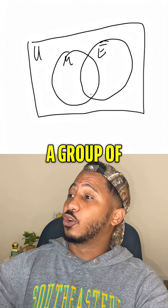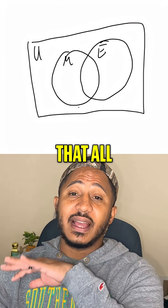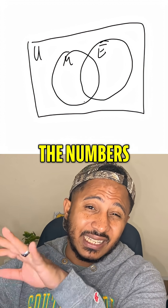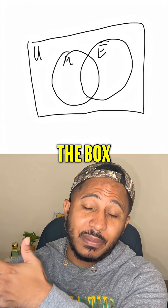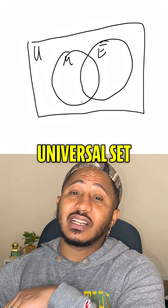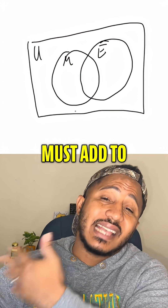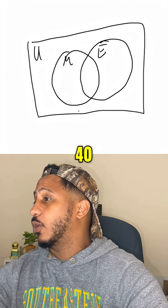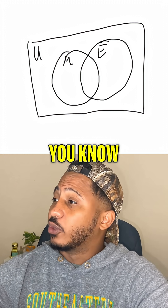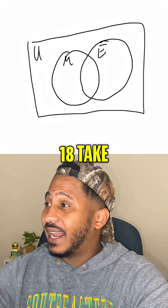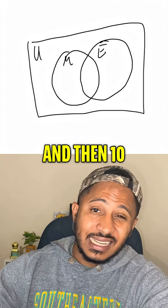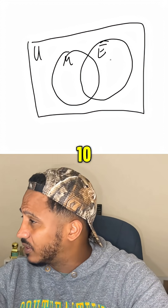Here it says that in a group of 40 students, we know that all the numbers inside the box, inside the universal set, must add to 40. Now, 25 take math, and 18 take English, and 10 take both.